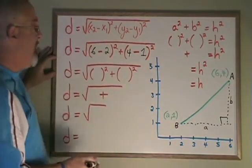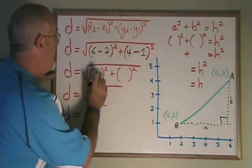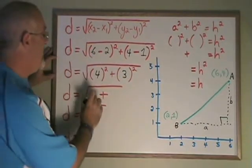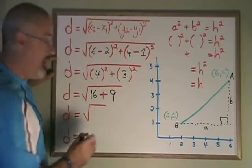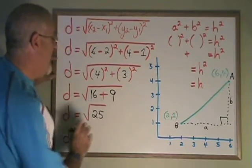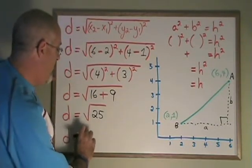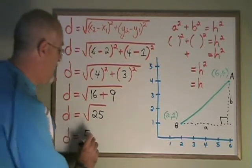Now, simplifying, 6 minus 2 is 4, 4 minus 1 is 3, 4 squared is 16, 3 squared is 9, and 16 plus 9 is 25. The square root of 25 is 5. We know our distance. Our distance is 5 units.